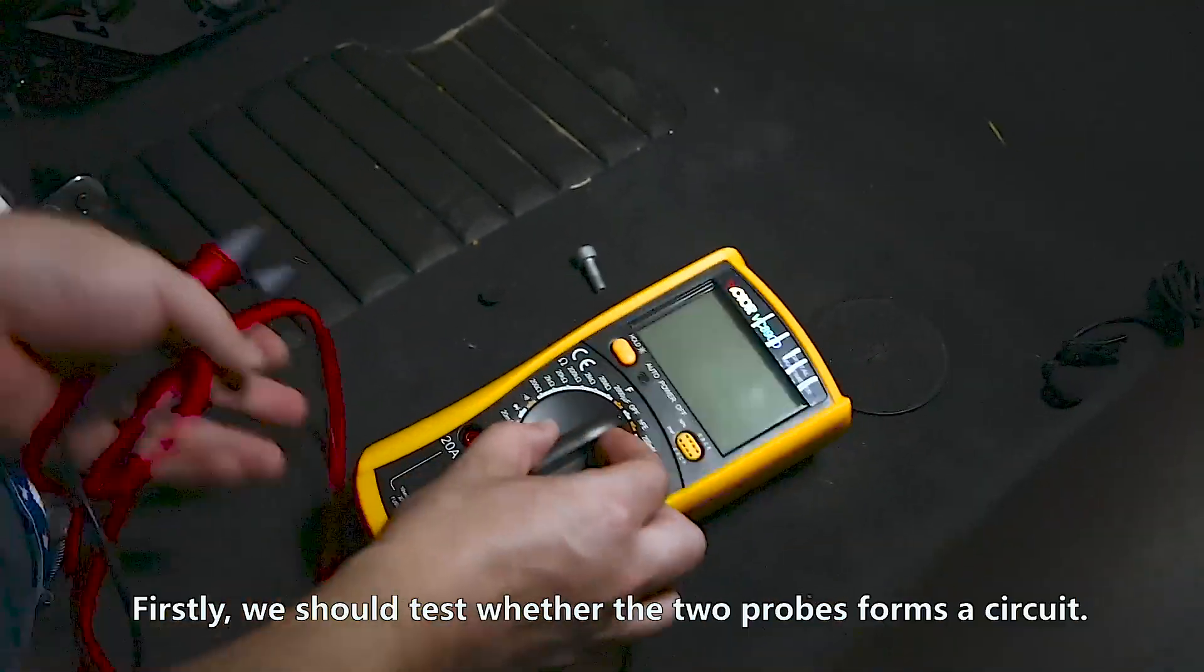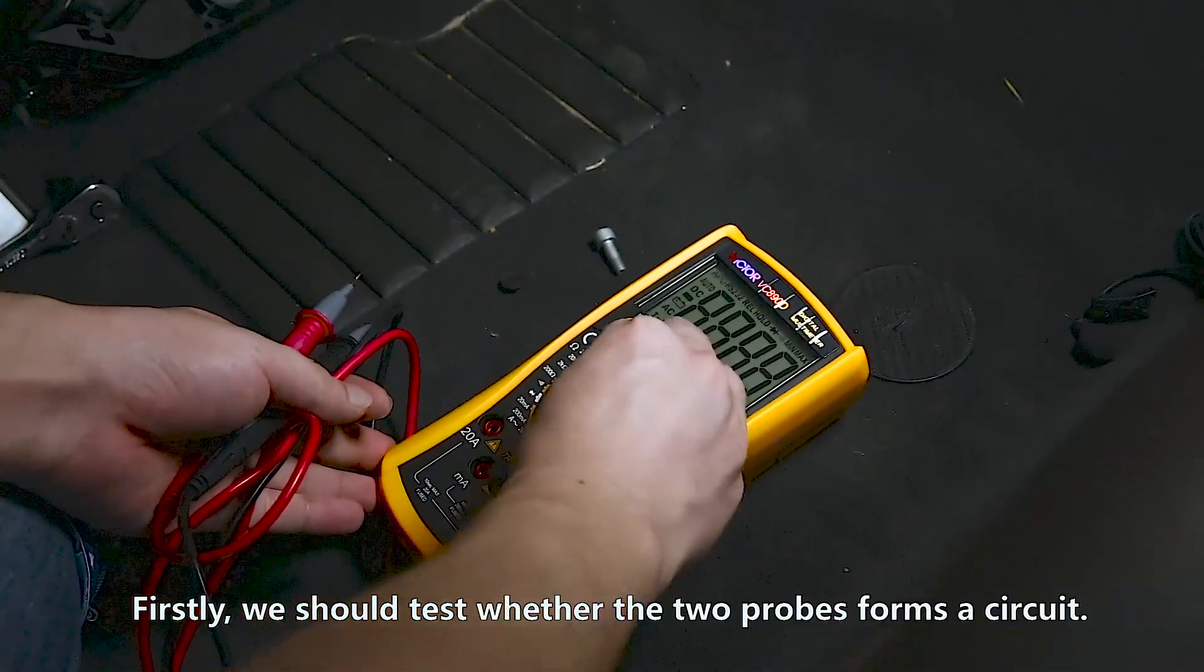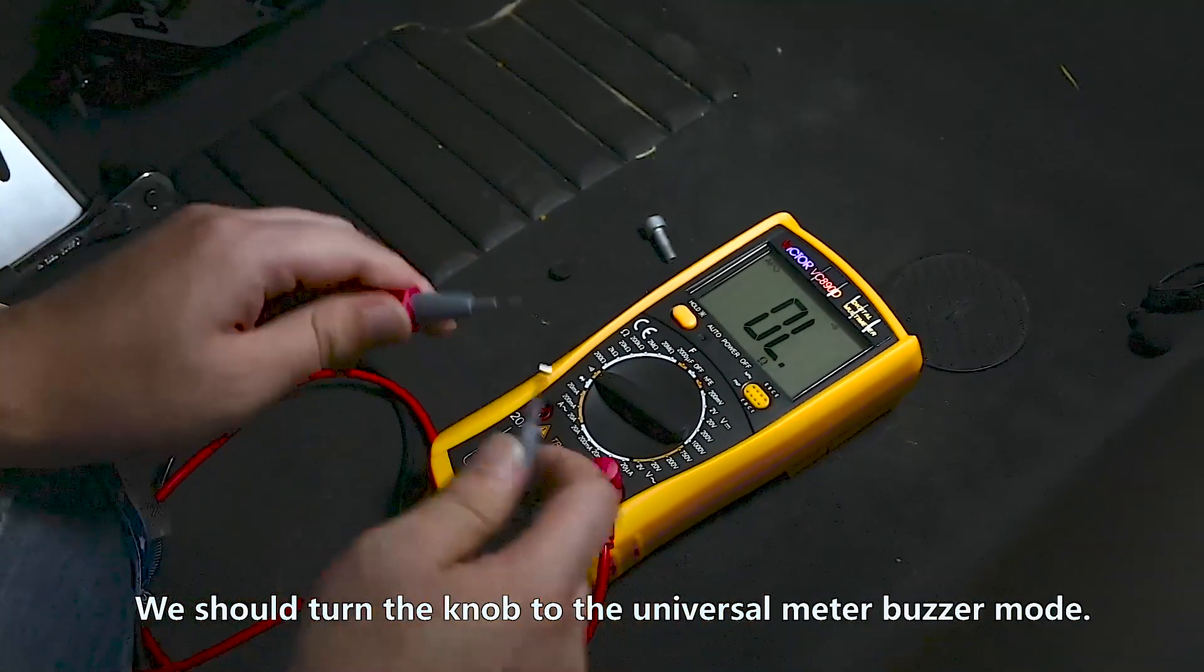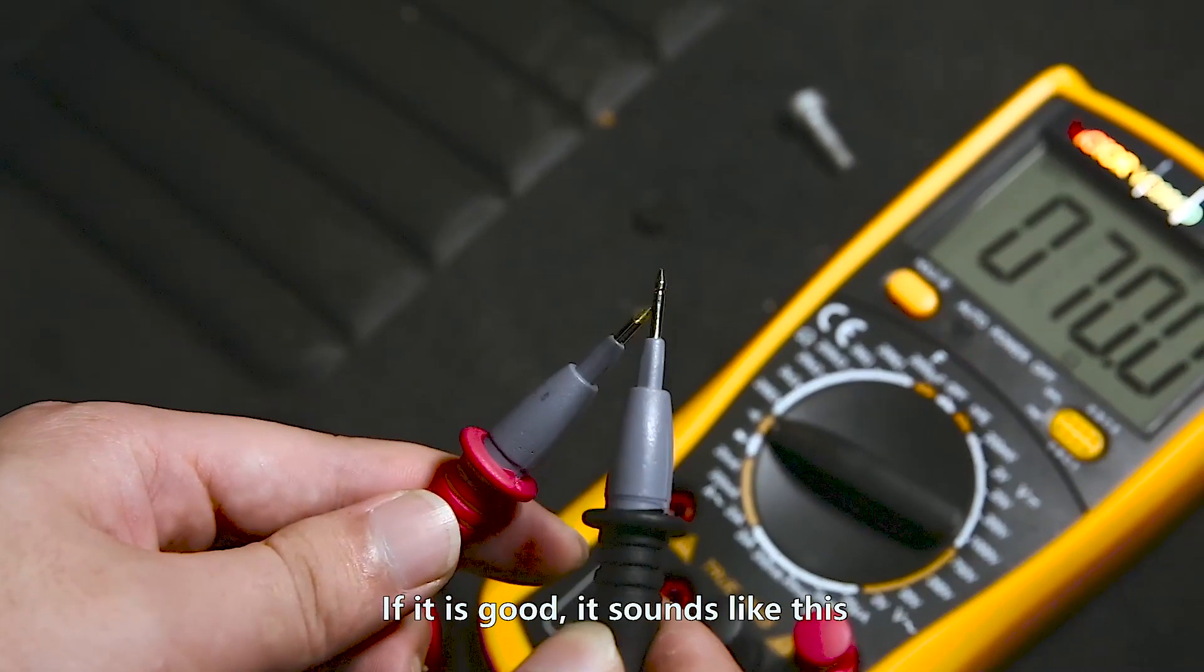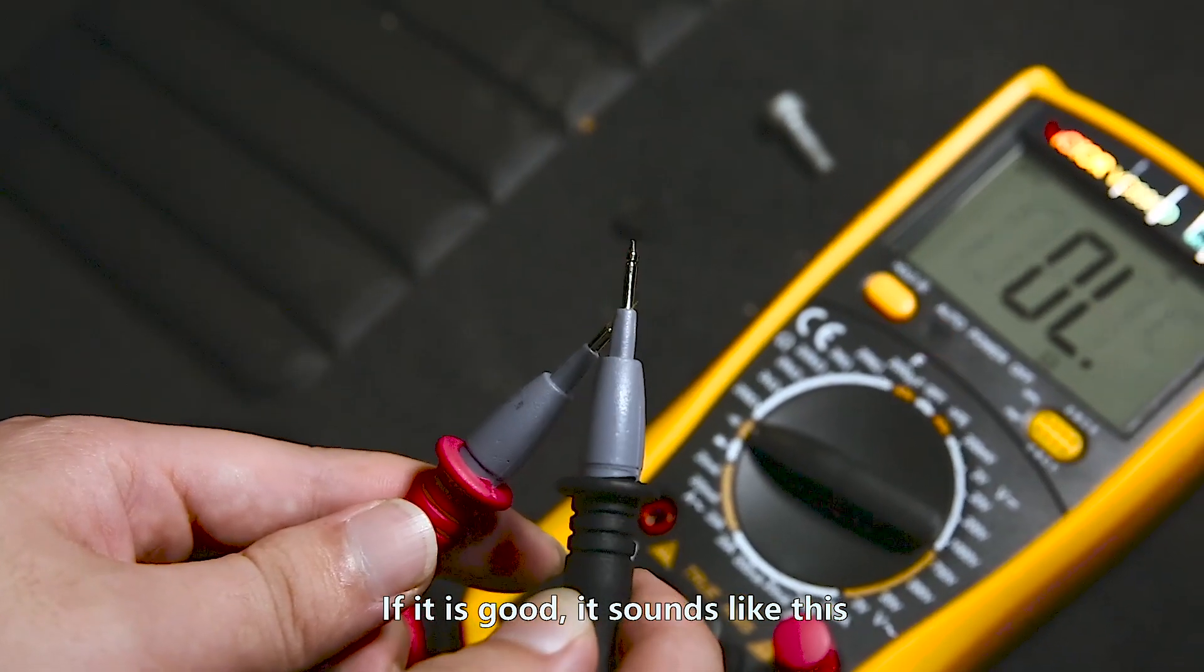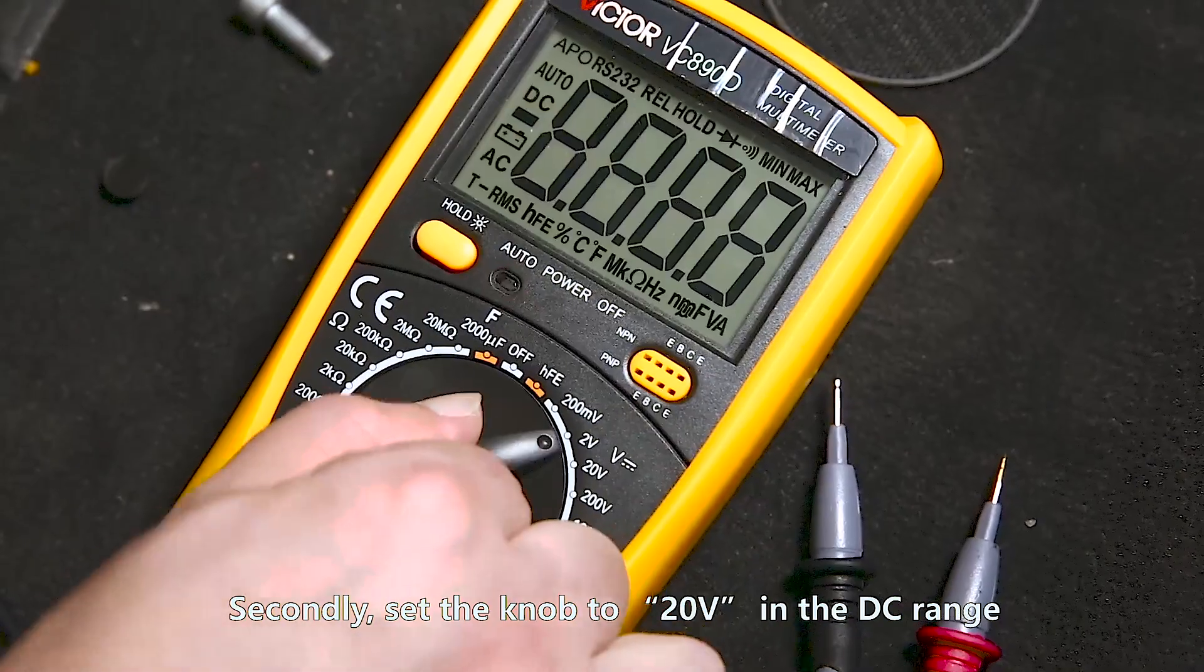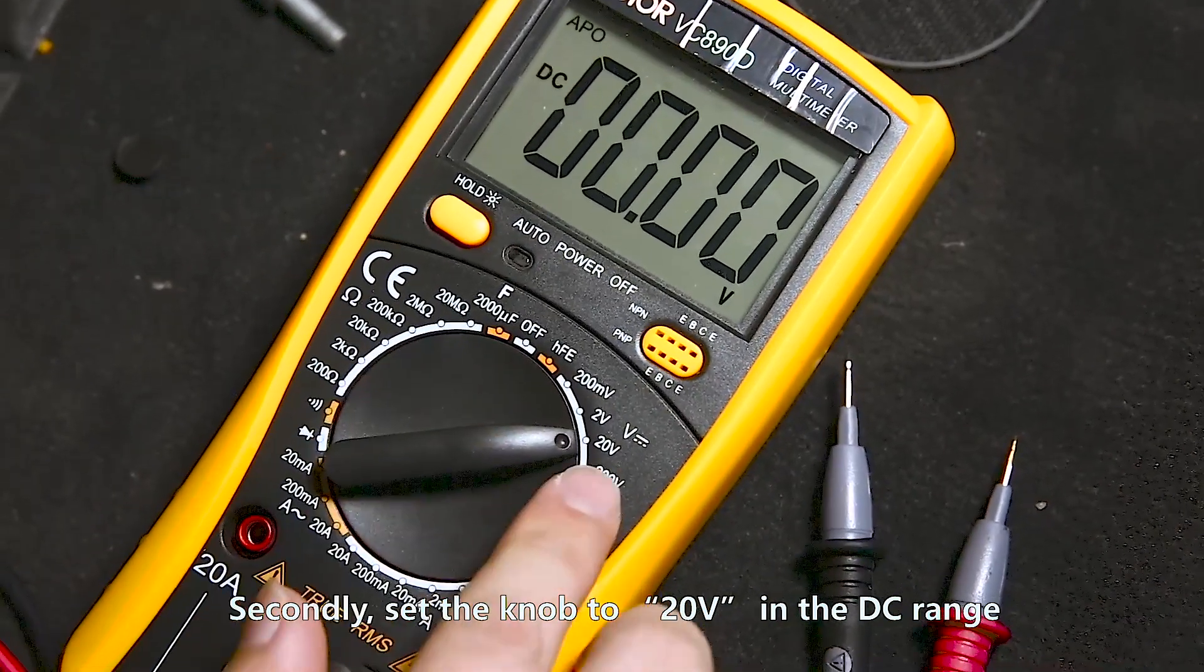Let's begin our test. Firstly, we should test the two probes for the circuit. We should turn the knob to the universal meter buzzer mode. If it is good, it sounds like this. Secondly, set the knob to 20V in the DC range.